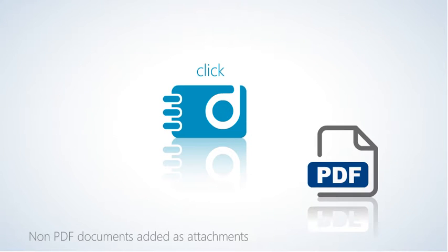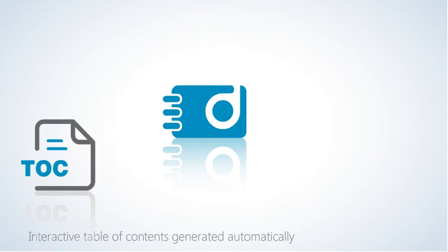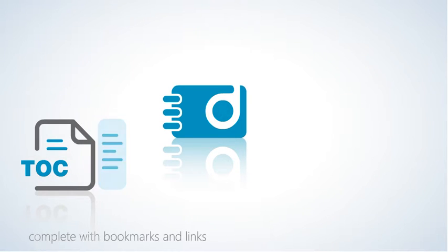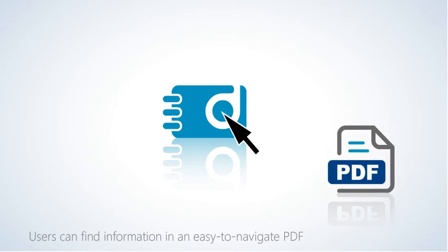Documents left in native format appear as attachments in the PDF. PDF Docs automatically generates an interactive table of contents, complete with bookmarks and links. Users can find and follow information in an easy-to-navigate PDF.